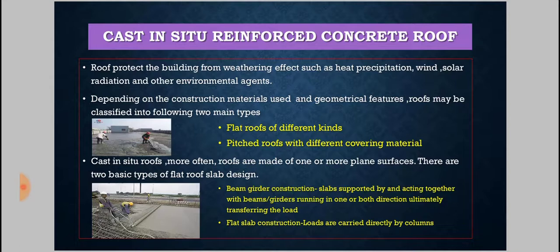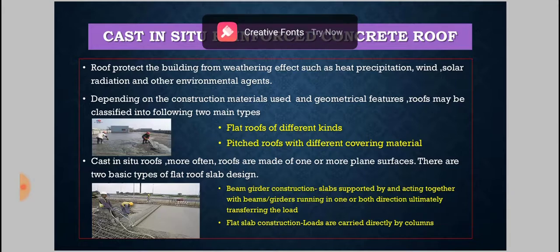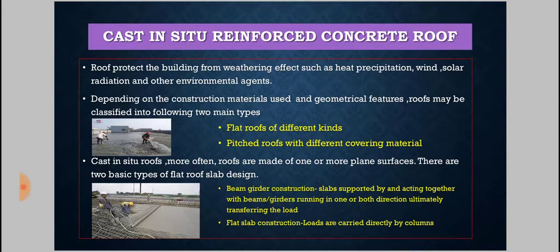Depending on the materials used, geometrical features, and placement, there are two types: flat roofs and pitched roofs. Flat roofs follow two design techniques. The first is grid frame construction, where beams and columns are arranged so that loads from the slab transfer to beams and then to columns and safely to the ground. The second is flat slab construction, where loads are transferred directly from the slab to the columns.